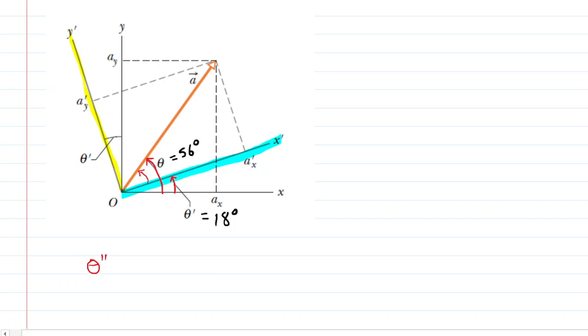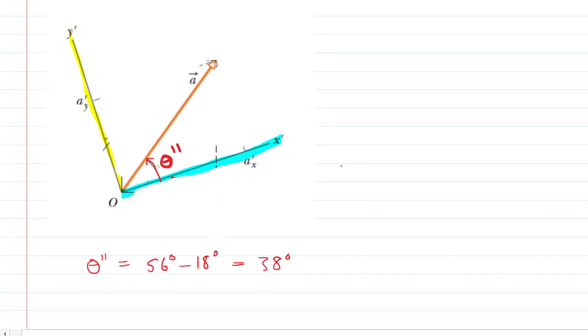So we're just going to call this theta double prime, and we're going to take 56 degrees, and we're going to subtract 18 degrees, and this is going to give us 38 degrees. So again, that's this angle right here. We'll kind of squeeze it in. That's theta double prime. And now that we have that established, we can actually erase the original X and Y axis for some clarity here.